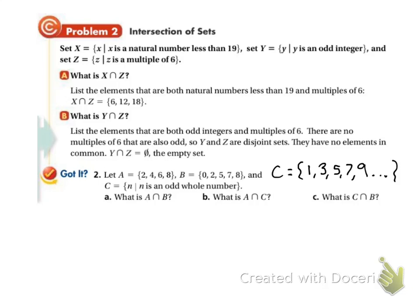Okay, so what is the intersection of A and B? So what numbers do A and B have in common? So they both have 2, and they both have 8, but that's it. So the intersection of A and B is 2 and 8.